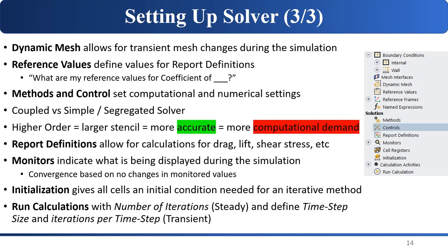There are coupled flow and SIMPLE (segregated) solvers — something you should look up, as there are a lot of resources online. There are also different numerical orders for the viscosity and turbulent terms. In general, higher order uses a larger stencil or Taylor expansion and allows for more accuracy, but there's a larger computational demand. Sometimes people say always use second or third order, but if there's no difference between first and second order, you can just use first order.